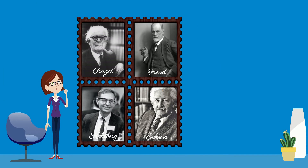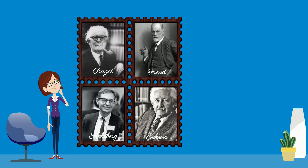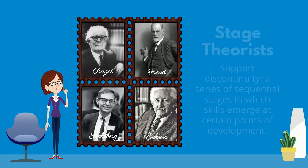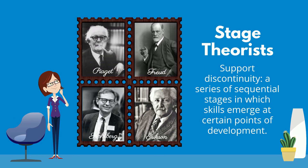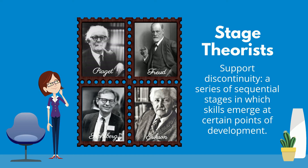The theories of Piaget, Freud, Kohlberg, and Erikson are called stage theories. Stage theory, or discontinuous development, assumes that developmental change often occurs in distinct stages that are qualitatively different from one another, and in a set universal sequence. At each stage of development, children and adults have fundamentally different qualities and characteristics.